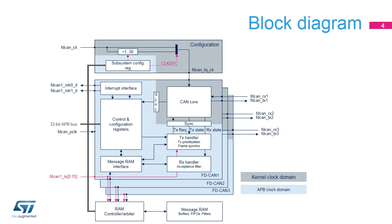The CAN subsystem supports three FDCAN controllers named FDCAN1, FDCAN2 and FDCAN3. These three controllers are independent, except for the clock unit and RAM which are shared and have the same functionalities. These controllers support both the basic extended CAN protocol versions 2.0 A and B with a maximum bitrate of 1 megabit per second, as well as the CAN FD protocol version 1.0 with up to 64 data bytes and a data bitrate of up to 8 megabits per second. The CAN core contains the protocol controller and receive transmit shift registers.